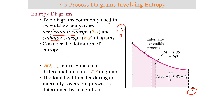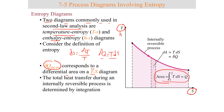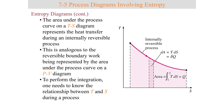If you look at the definition of entropy, the heat transfer corresponds to a differential area on a TS diagram. The heat transfer is equal to T dS. If you look at a TS diagram, the area underneath the curve is equal to the total heat transfer. The total heat transfer during an internally reversible process is determined by integrating this differential. This is analogous to the reversible boundary work being represented by the area underneath the PV diagram.